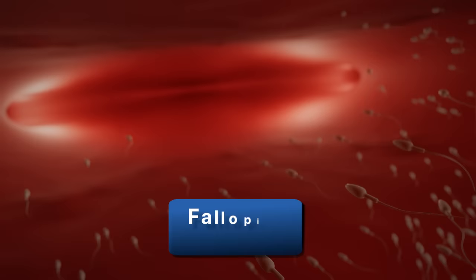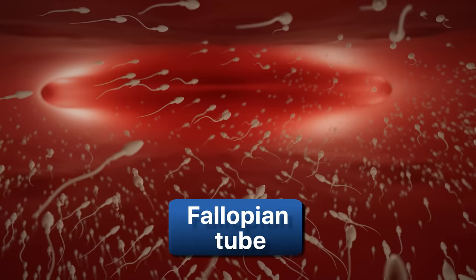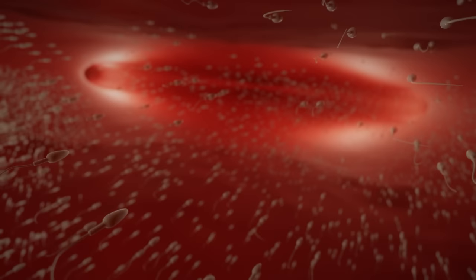Afterwards, half of the sperm enter the empty fallopian tube, while the other half swims to the fallopian tube containing the yet unfertilized egg. Now, only a few thousand remain inside the fallopian tube.